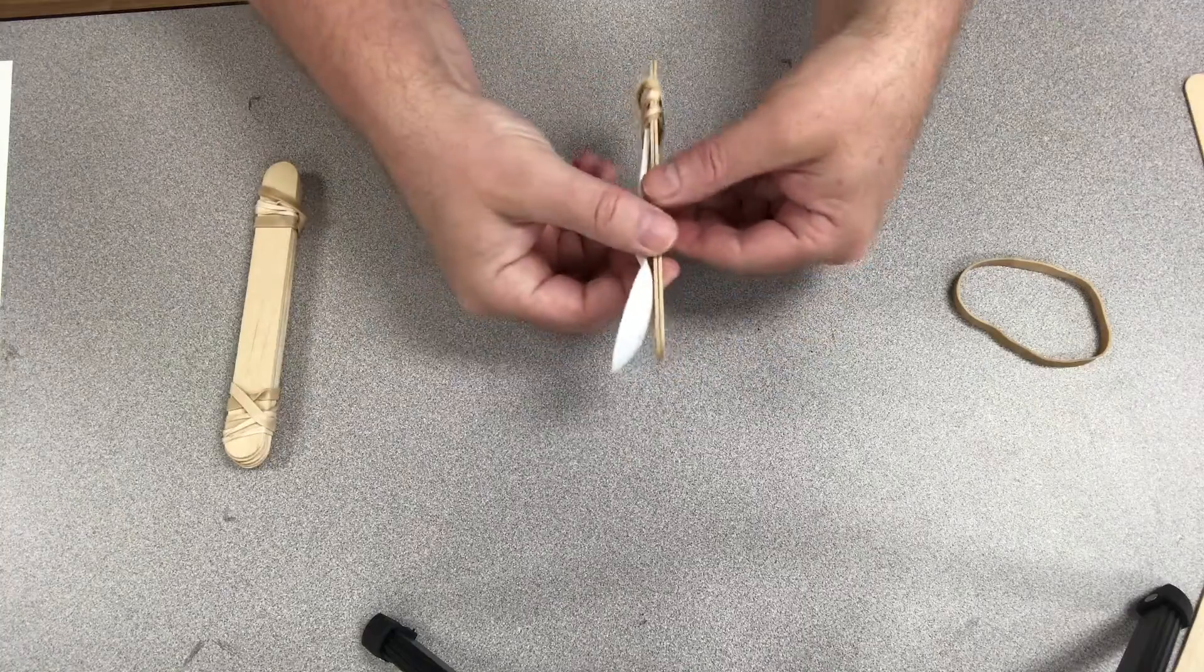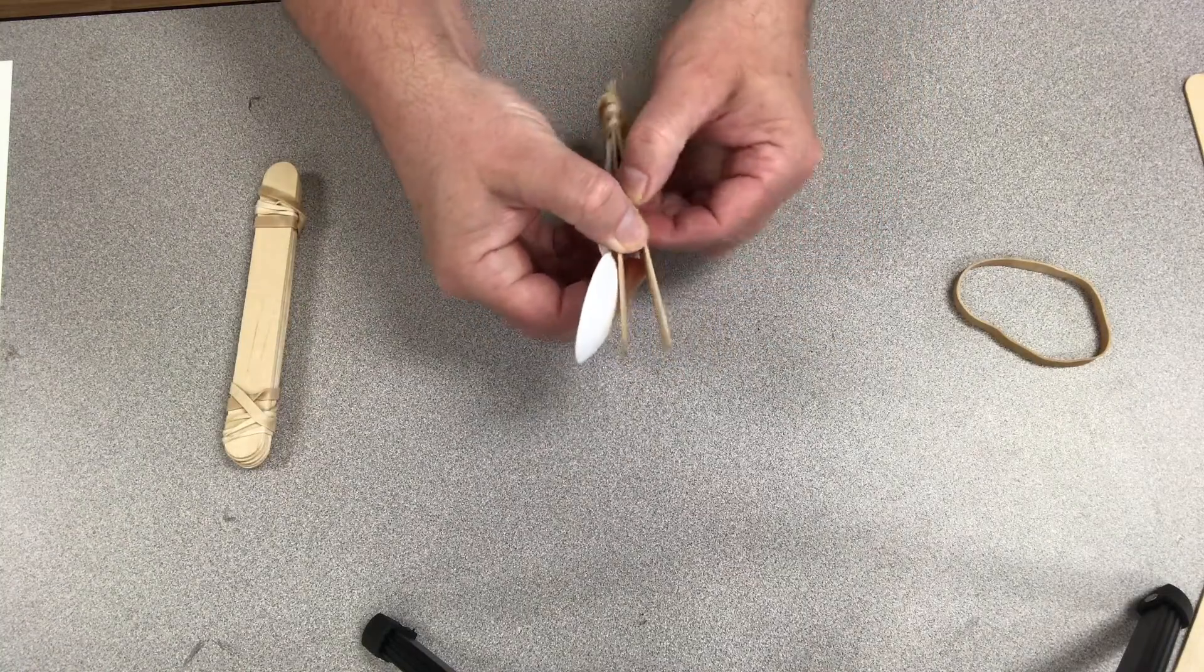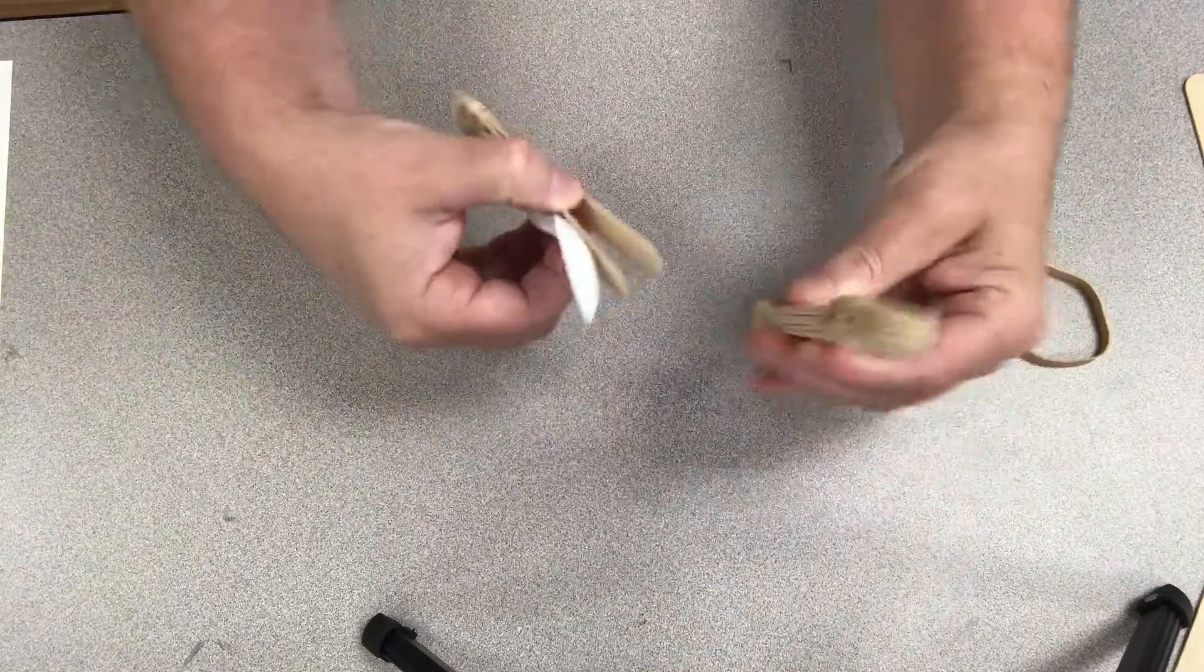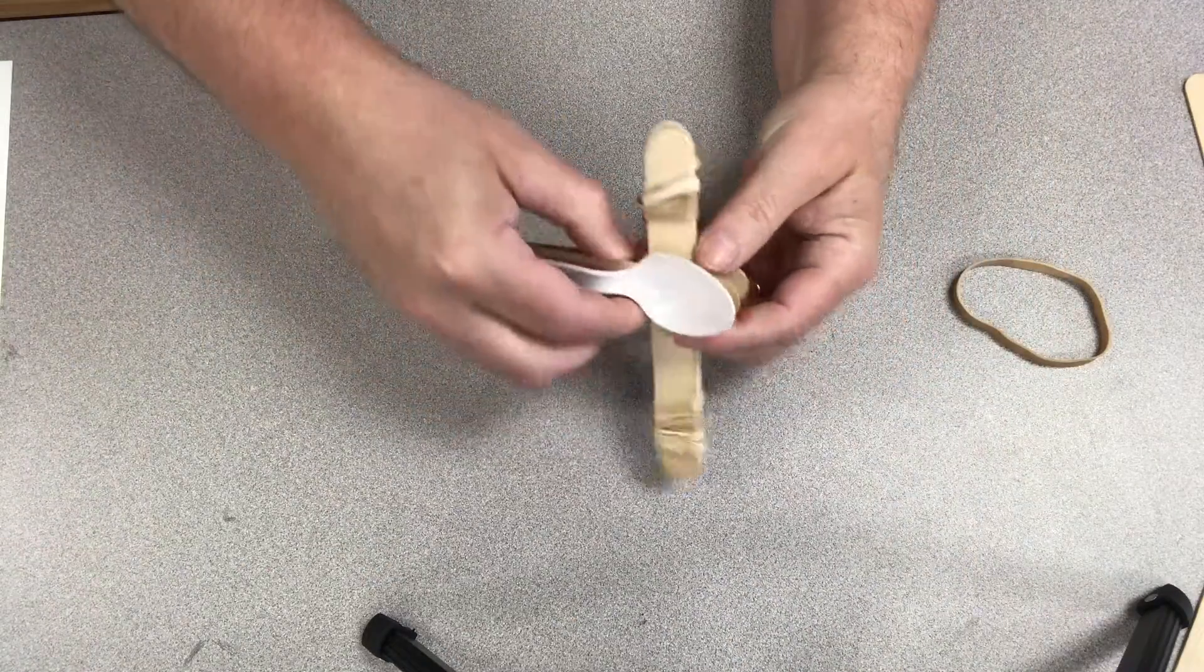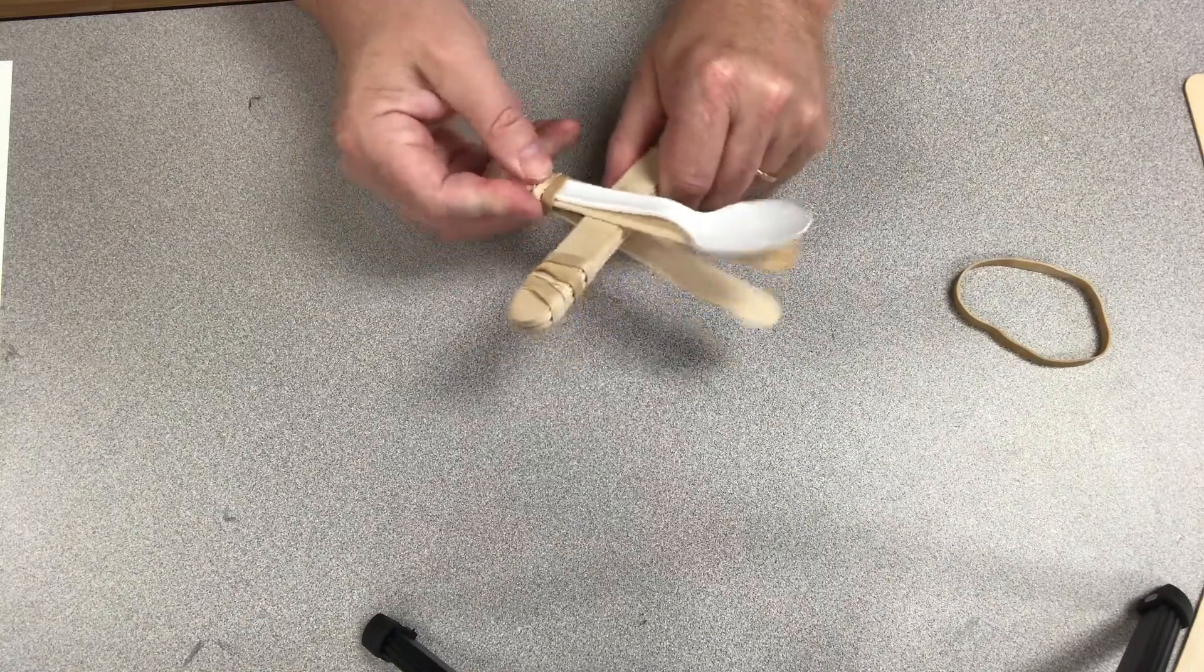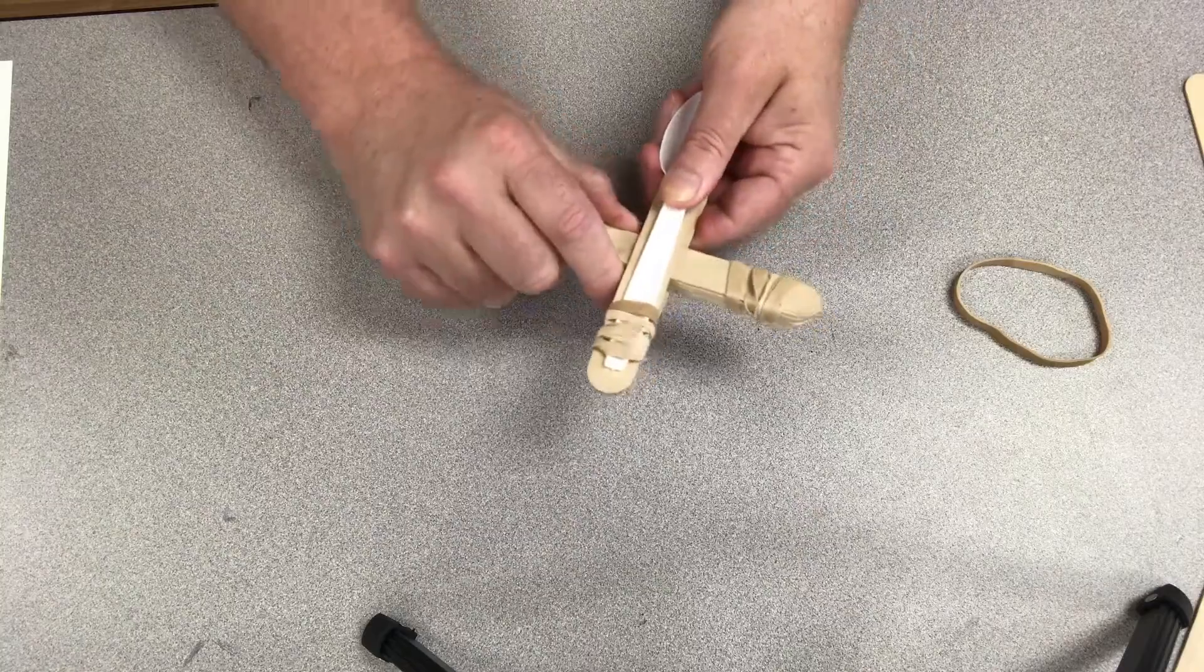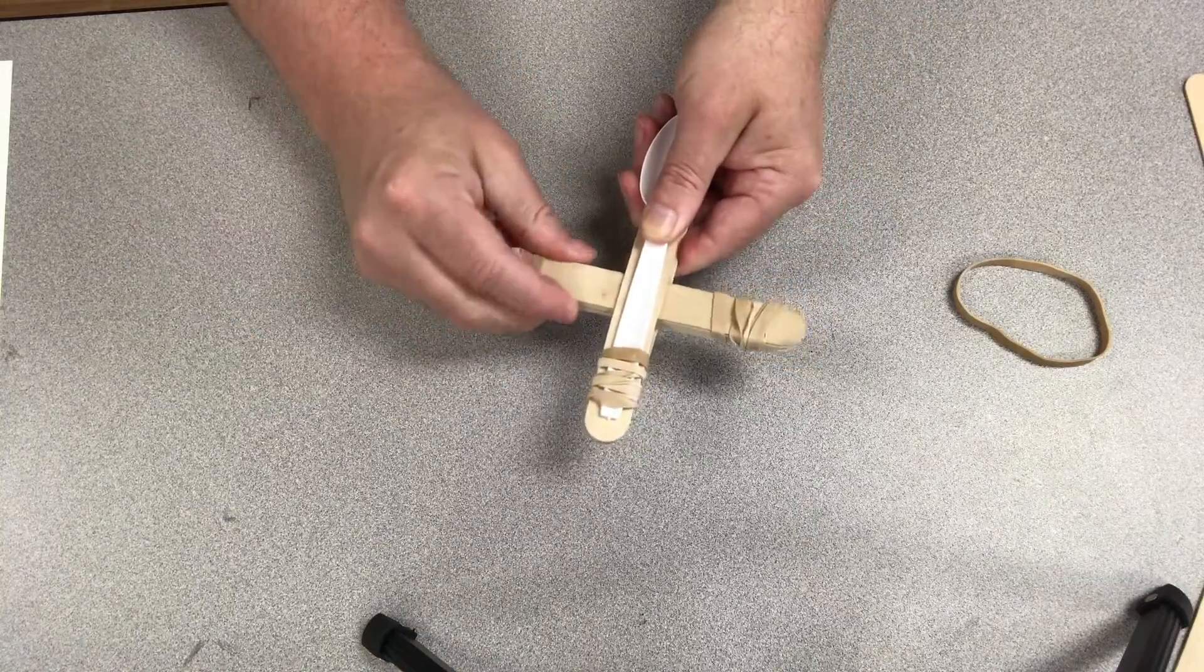So you can take the two sticks now and open it up just like a mouth of a crocodile. Then you're going to take the bundle and stick it into the mouth. You're going to adjust the spoon and the sticks down as far as you can go. It'll be pretty tight.